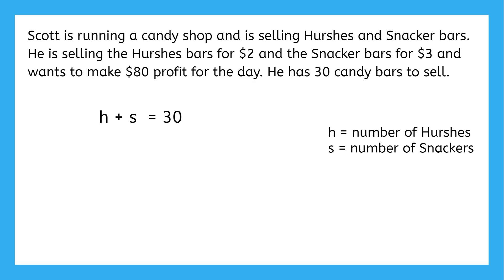The second equation will be a little more difficult. Scott wants to make $80 selling these candy bars. That $80 will be made up of $2 for every Hershey's bar he sells and $3 for every snacker bar.